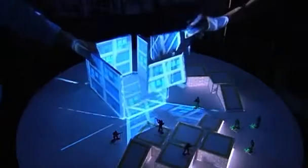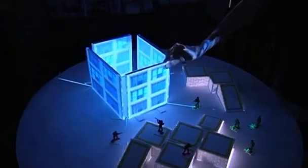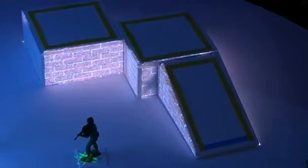Move any of these surfaces and it becomes clear that what you're seeing is a projected image overlaid on a real-life object. It's called spatially augmented reality.